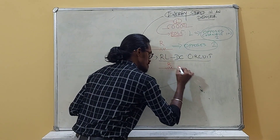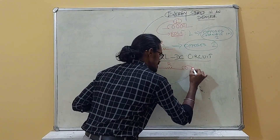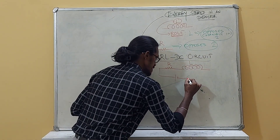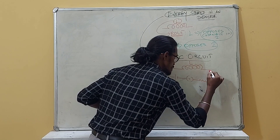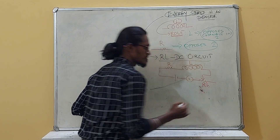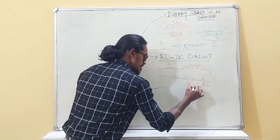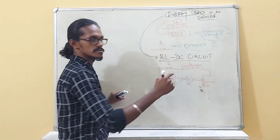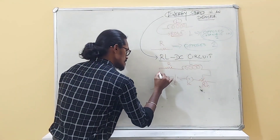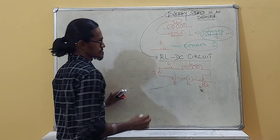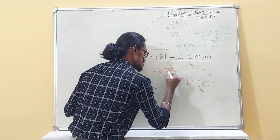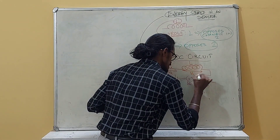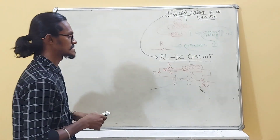A resistor of resistance R and an inductor of inductance L are connected in series to a power supply, a key, and a variable resistor (rheostat) in the circuit. Once the key is on, current I flows through the resistor, producing a voltage drop V_R across the resistor and a voltage drop V_L across the inductor.